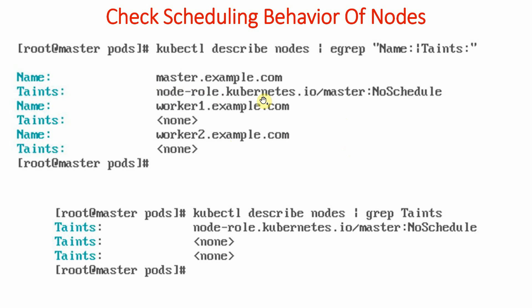By default, pods or other objects will not get scheduled on the master system, although we can change that. In the case of worker one and worker two, there is no such taint, so whenever we launch any objects they will be launched on worker one and worker two. We can also change this taint later — we will be discussing taints in greater detail. We can also run 'kubectl describe nodes', pipe the output to grep, and search for 'taints'. It again shows that node role kubernetes.io/master: NoSchedule — meaning by default, when we implement the Kubernetes cluster, objects will not get scheduled on the master.